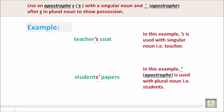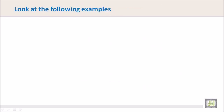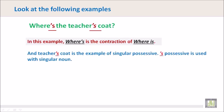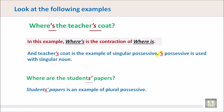Look at the following examples. 'Where's the teacher's coat?' Here, 'where's' is the contraction of 'where is,' and 'teacher's coat' is an example of singular possessive. 'Where are the students' papers?' — 'students' papers' is an example of plural possessive, where the apostrophe appears after the s.